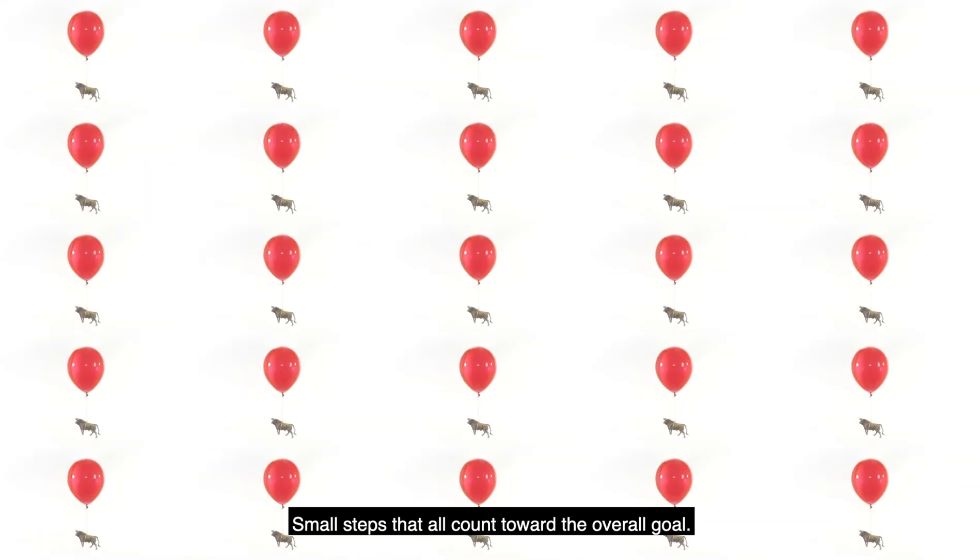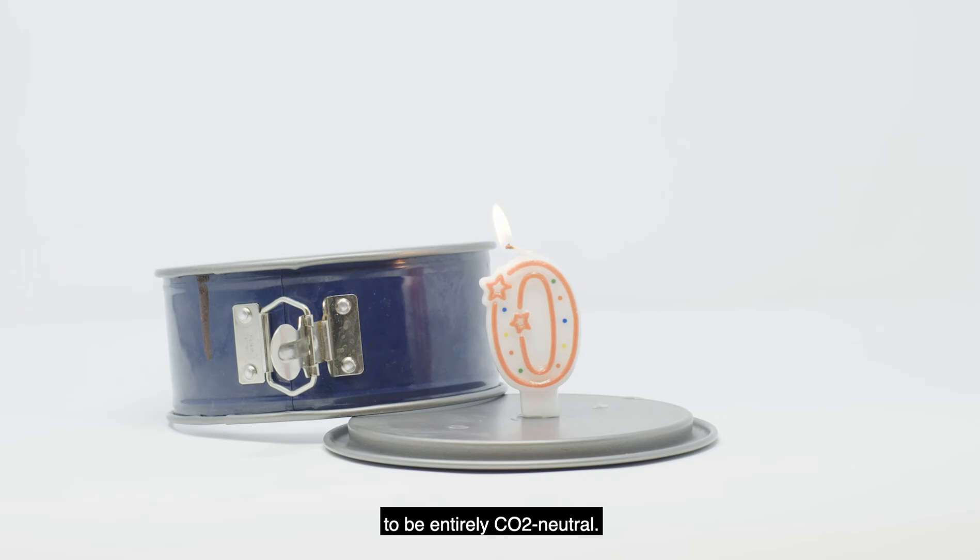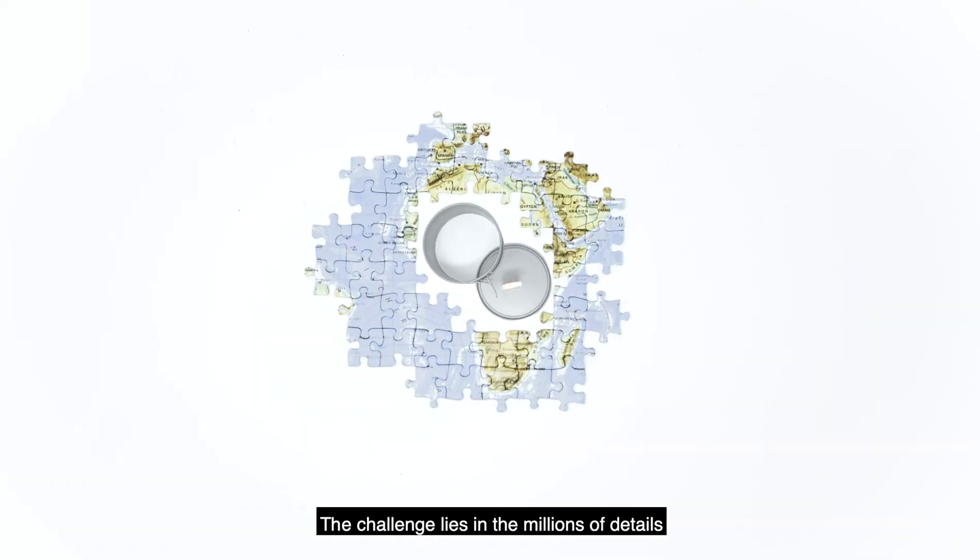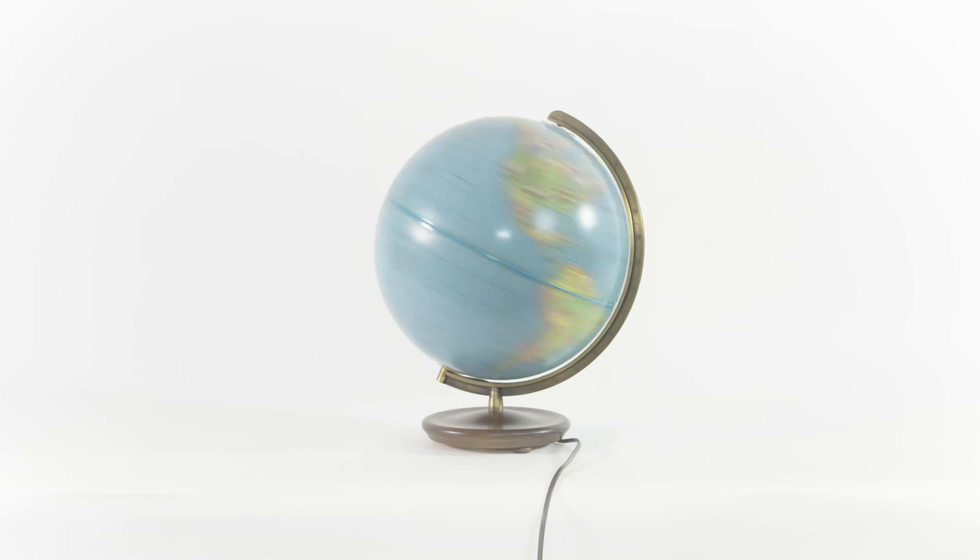Small steps that all count toward the overall goal. We've set the foundation for Audi's vision for 2050 to be entirely CO2 neutral. We know that we still have a way to go. The challenge lies in the millions of details to be coordinated with thousands of suppliers, partners, and governments around the globe.